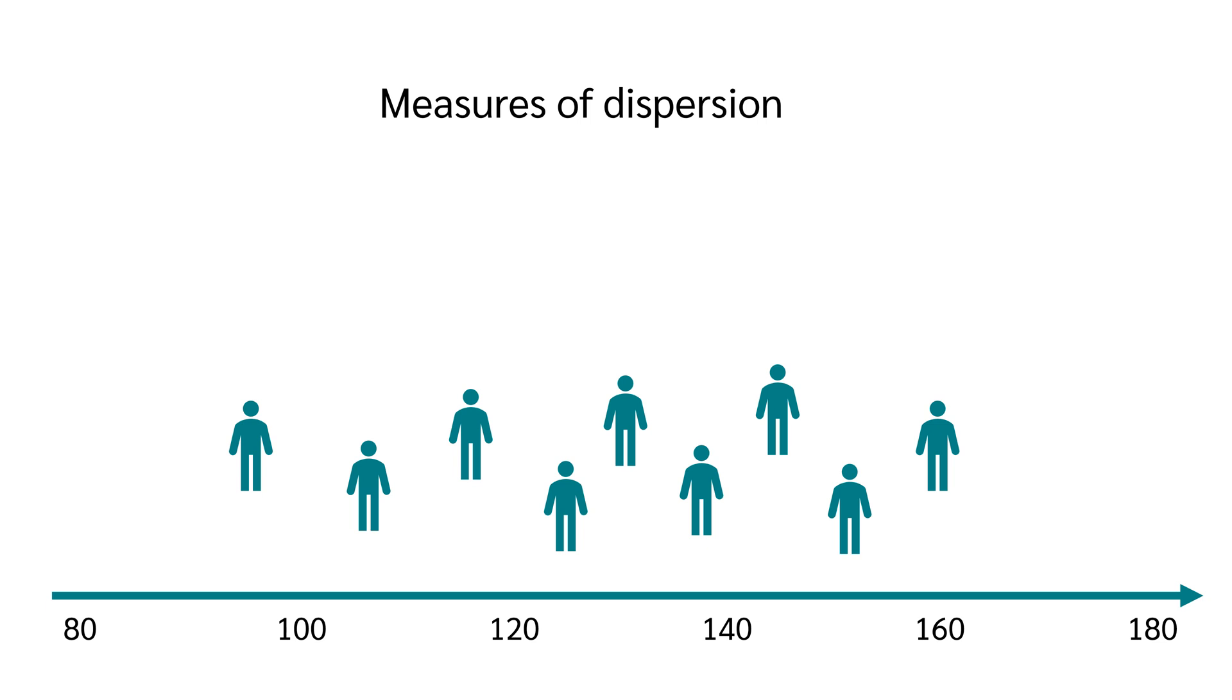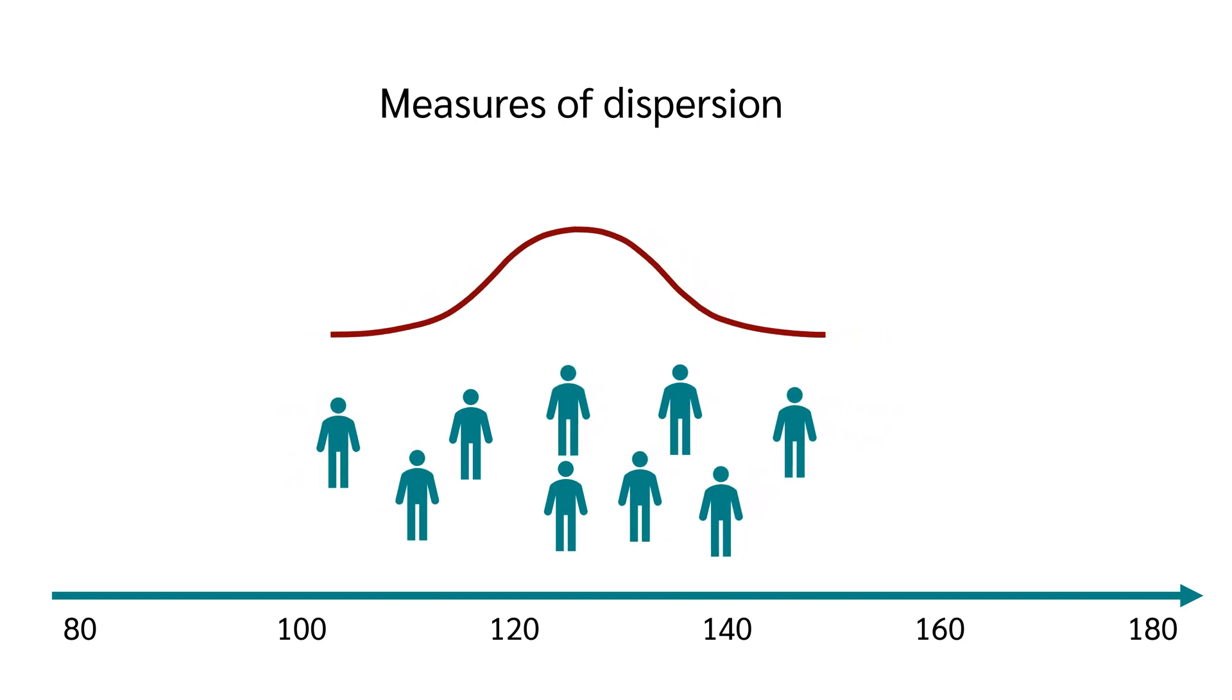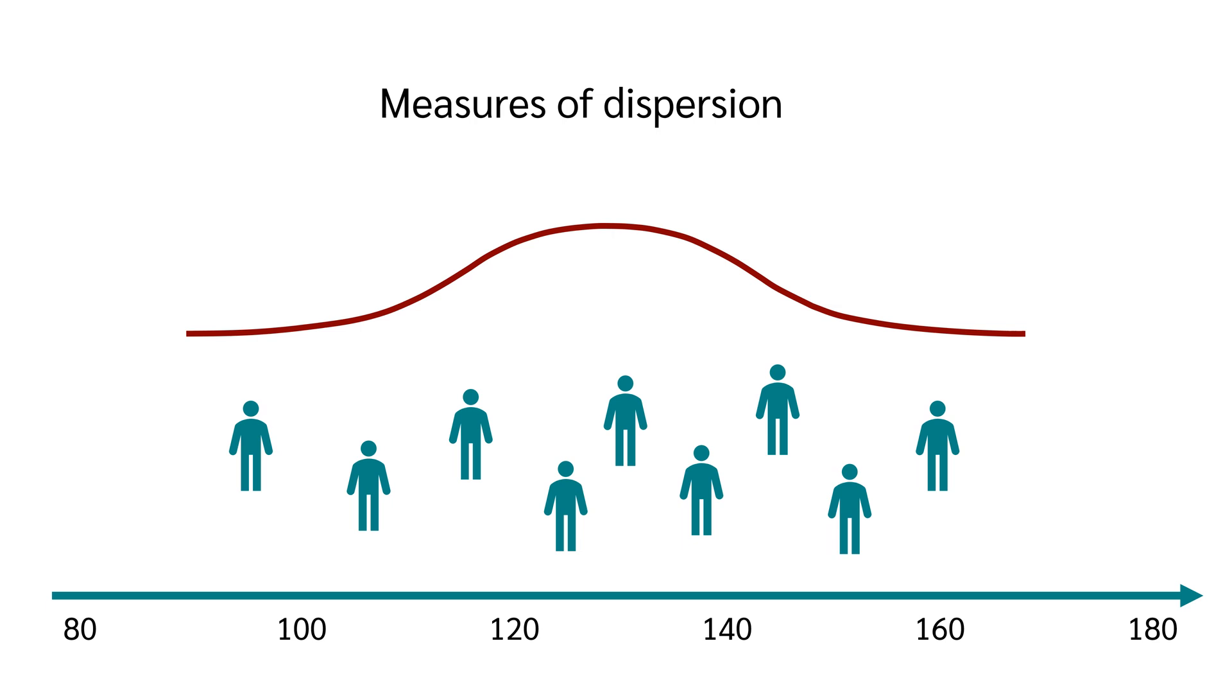Measures of dispersion, like the standard deviation, the range, and the interquartile range, indicate how spread out the data points are, whether they are closely packed around the center or spread far from it.